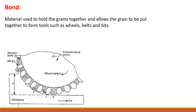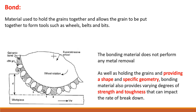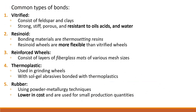This is Professor Cummings and this is the second part of our discussion on grinding. In the last video we went over the bond, the grit, the porosity, and we had stopped at the slide on the bond itself. The bond material is used to hold the grains together, allowing them to form tools, wheels, and different types of shapes. It holds the grains, provides shape, gives specific geometry, and provides a certain amount of strength and toughness.